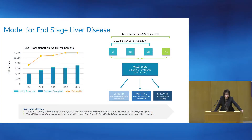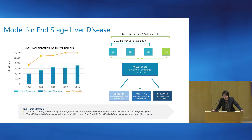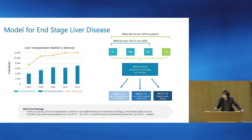Liver transplants, as with any solid organ transplants, are limited by a lack of supply. That's why we want to preferentially give transplants to those who are the sickest, as they will benefit the most. To define sickness in the liver transplant population, we largely depend on the model for end-stage liver disease, or MELD score. MELD is a standardized score that uses your latest creatinine, INR, and bilirubins to compute a standardized value. The higher your MELD score, the sicker your liver is presumed to be, and the more regional and national organ-sharing opportunities that this unlocks.